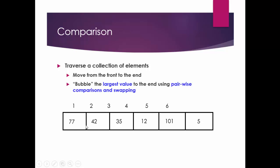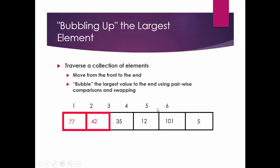First, 77 and 42 will be compared. Because 77 is greater than 42, 42 will come here and 77 will go there — swapping is done. Now since 77 is here, 77 and 35 will be compared. 35 is smaller, so 35 will come here and 77 will be there. This is how we will proceed.